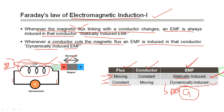In the transformer, statically induced EMF is produced in the secondary side because the conductor is constant but the flux is moving. The flux moves because transformers always work on AC (alternating current) power supply. Alternating current produces alternating flux in the primary coil, and with a constant secondary conductor nearby, EMF is induced across the secondary coil — this is statically induced EMF.